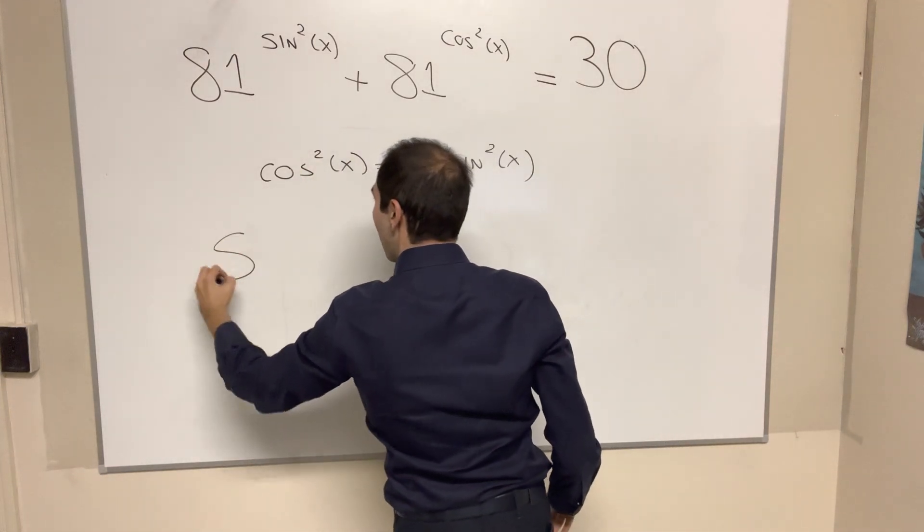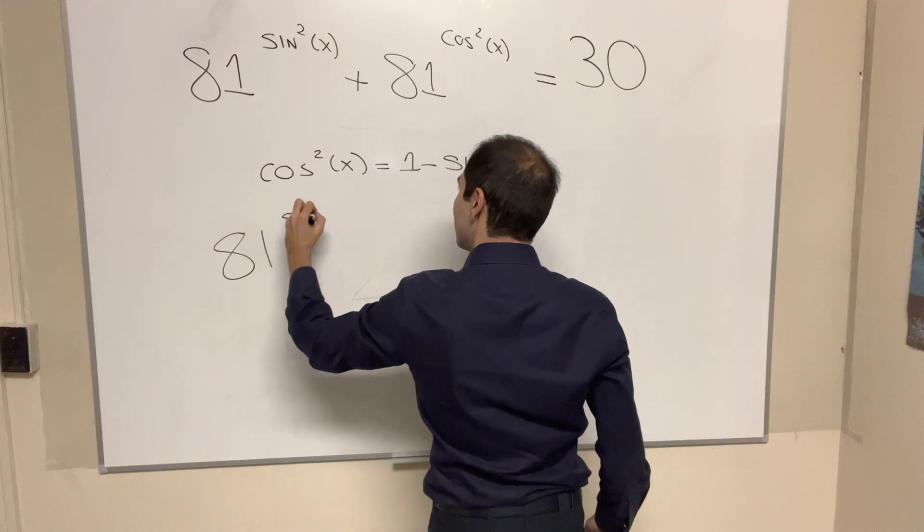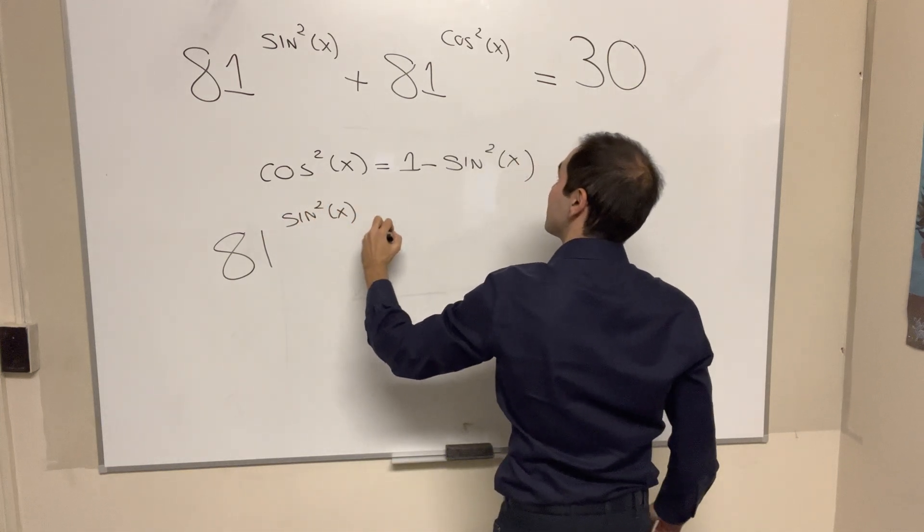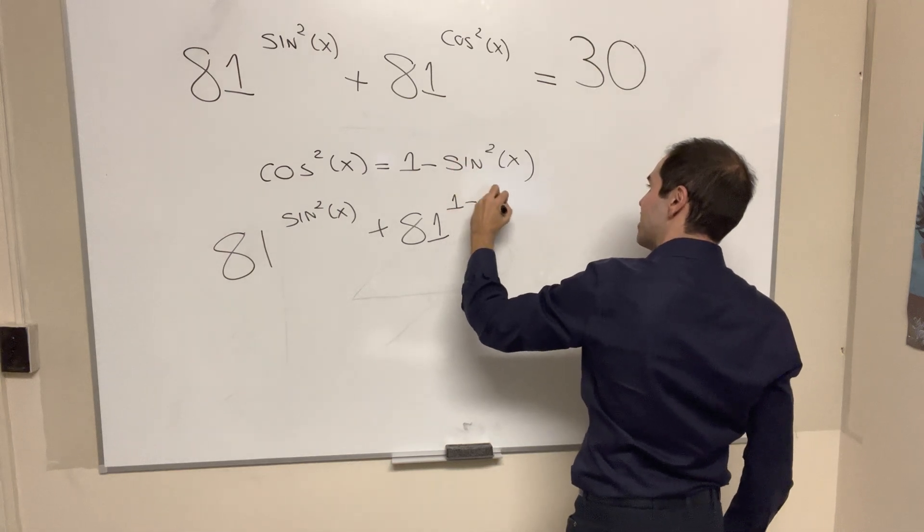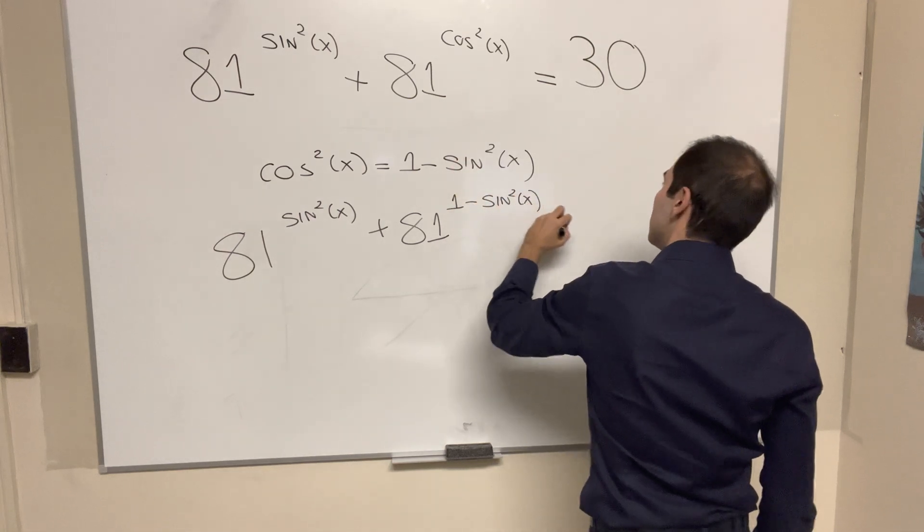So in other words, this problem just becomes 81 to the sine squared x plus 81 to the 1 minus sine squared x equals 30.